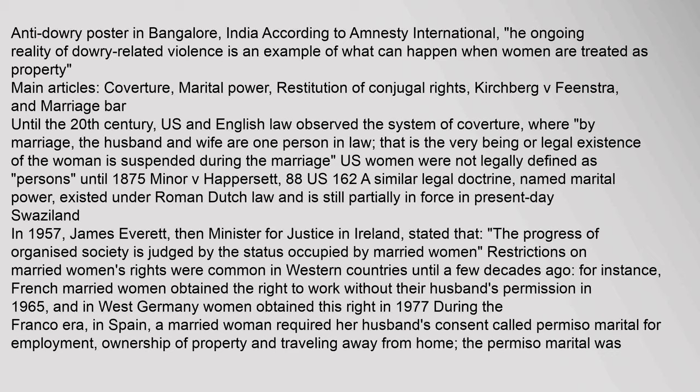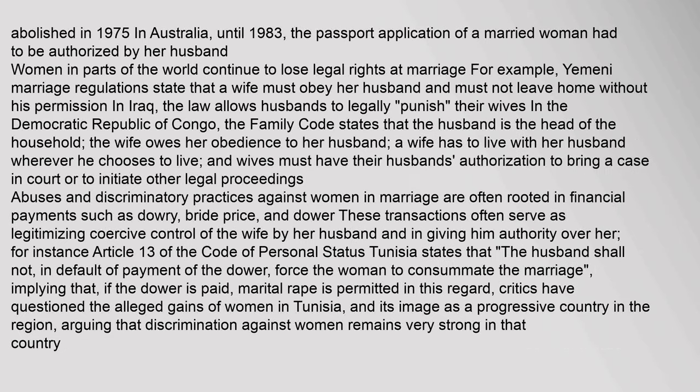Restrictions on married women's rights were common in Western countries until a few decades ago. French married women obtained the right to work without their husband's permission in 1965, and in West Germany women obtained this right in 1977. During the Franco era in Spain, a married woman required her husband's consent — called permiso marital — for employment, ownership of property, and traveling away from home; the permiso marital was abolished in 1975. In Australia, until 1983, the passport application of a married woman had to be authorized by her husband. Women in parts of the world continue to lose legal rights at marriage; for example, Yemeni marriage regulations state that a wife must obey her husband and must not leave home without his permission. In Iraq, the law allows husbands to legally punish their wives. In the Democratic Republic of Congo, the family code states that the husband is the head of the household and the wife owes obedience to her husband.